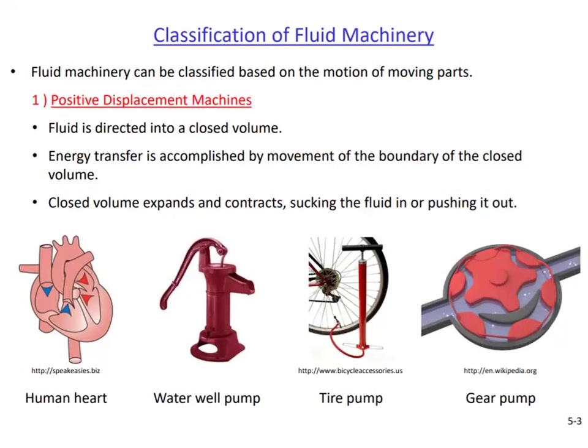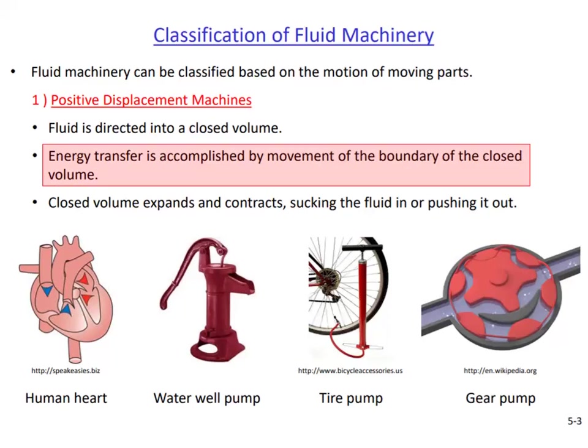We just watched the general working principle of positive displacement machines. In positive displacement machines, fluid is transferred by moving the boundaries of closed volumes that enclose the fluid. The chambers of the heart are these enclosing volumes. As these chambers expand and contract, blood gets sucked in and pushed out. All positive displacement fluid machines work with a similar logic.